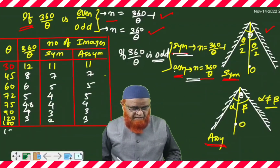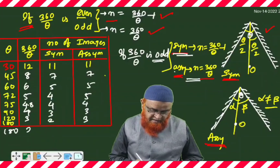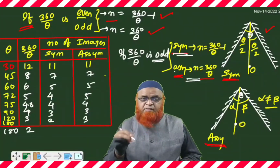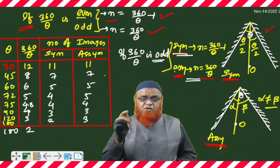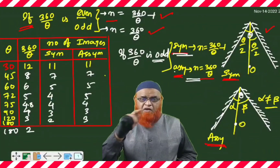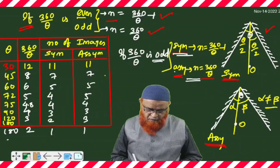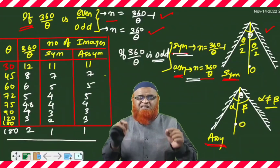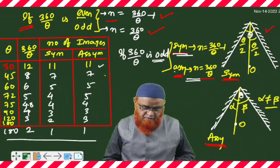For 180 degrees, 360 divided by 180 is 2, which is even, so you get 1 less than 2 — that is 1 image in both cases. This is the final step. This shortcut tabular column will help you solve 7 problems.